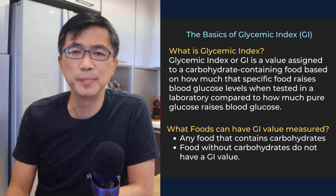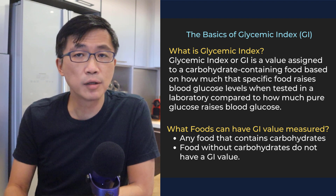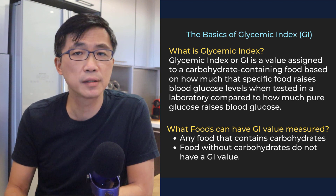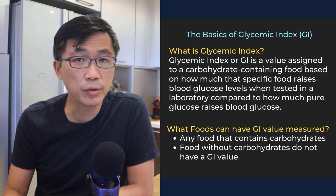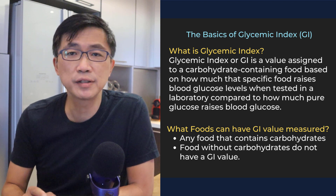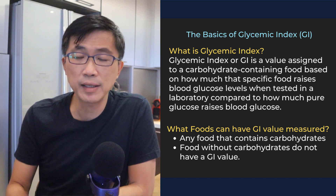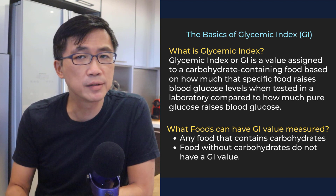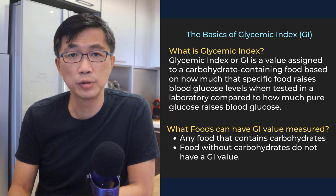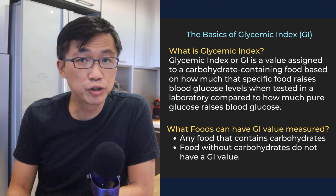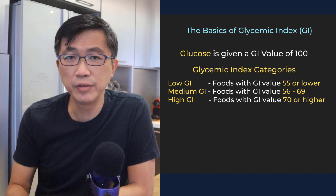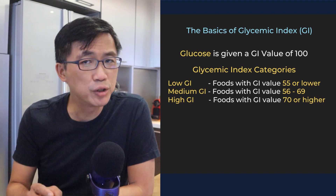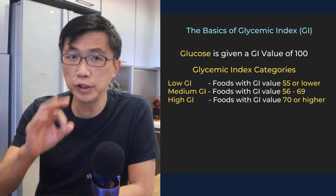Firstly, what is Glycemic Index? Glycemic Index, or GI, is a value assigned to a carbohydrate-containing food based on how much that specific food raises blood glucose levels when tested in a laboratory, compared to how much pure glucose raises blood glucose. Arbitrarily, glucose is given a GI value of 100.